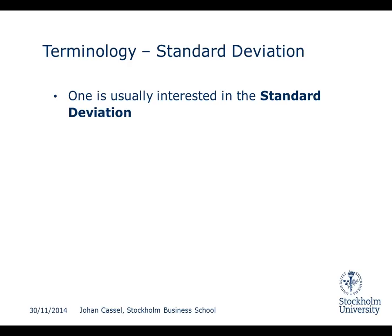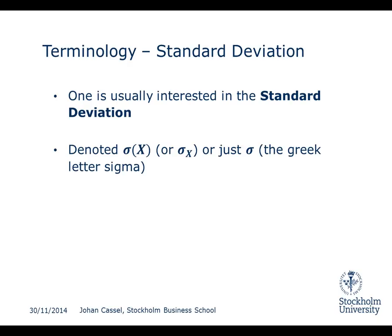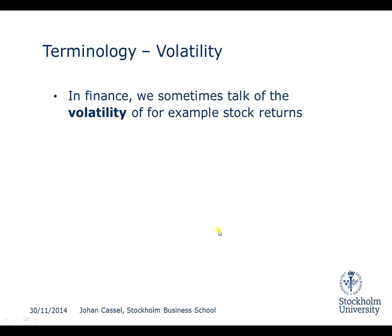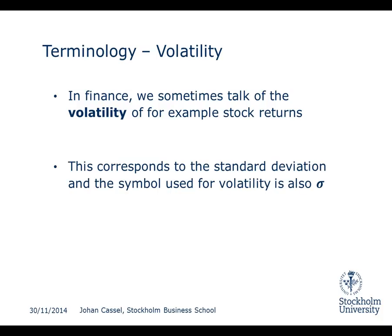We also have something called standard deviation, and I'll get back to why we have both. This is denoted as sigma of x, or sigma with an x subscript, or just sigma — and again, this is the Greek letter sigma. Sometimes you also write it with the letters SD, which is short for standard deviation. In finance, we talk about the volatility of stock returns, and the volatility corresponds to the standard deviation, also symbolized by sigma.